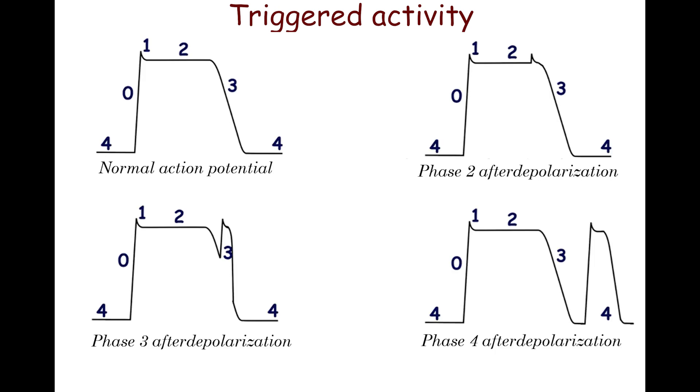Triggered activity results from premature activation of cardiomyocytes by after-depolarizations. An after-depolarization is a depolarization that occurs during or after the repolarization phase. After-depolarizations are classified as early if they occur within phases 2 and 3, or delayed if they occur within phase 4.